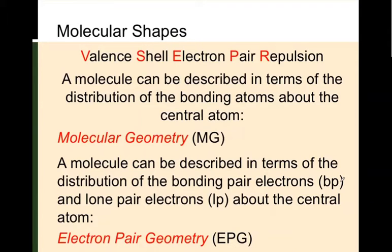Molecular geometry only considers the bonding pairs — the single bonds, double bonds, and triple bonds. It doesn't care about any lone pairs. But electron pair geometry does care about both bond pairs and lone pairs about the central atom. So it considers the distribution of both bonding pair electrons (BP) and lone pair electrons (LP) about the central atom. This is called electron pair geometry.